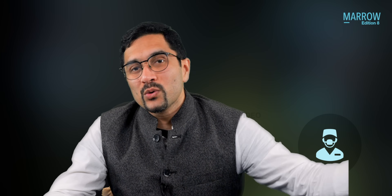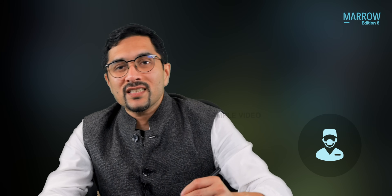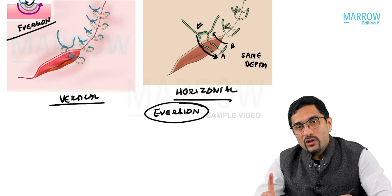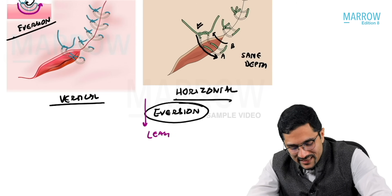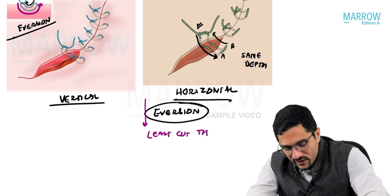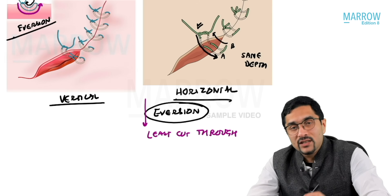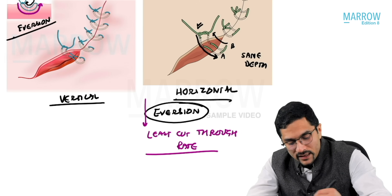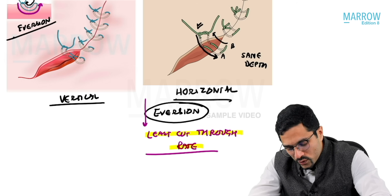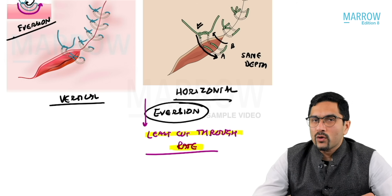Sometimes when you open the dressing after a few days, the suture has cut through the skin — this is known as the cut-through rate. Among the sutures discussed, the horizontal mattress has the least cut-through rate, meaning it has the least chance of tearing the skin. This question was also asked four or five years back in the exam.